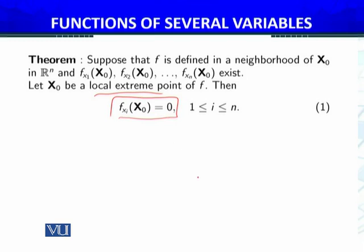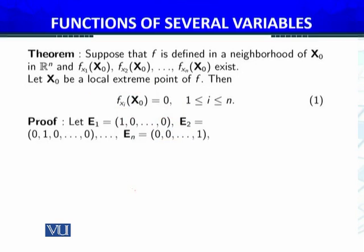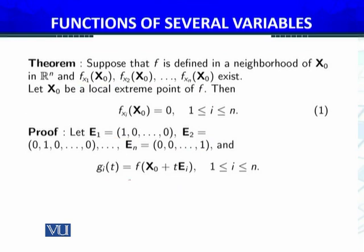In the proof, we use the definition of partial derivatives as a particular case of the directional derivative. Let e₁, e₂, …, eₙ be the unit vectors along x₁, x₂, …, xₙ. We define gᵢ(t) = f(x₀ + t·eᵢ) for i between 1 and n. Then gᵢ(t) is a function of one variable.